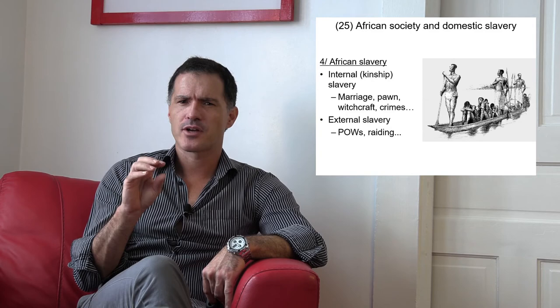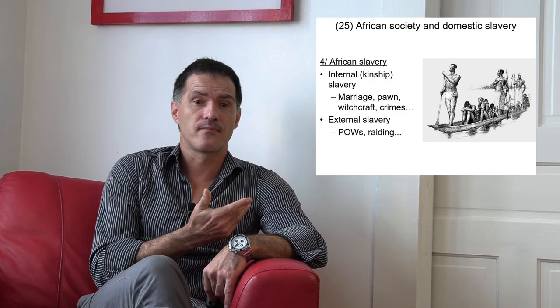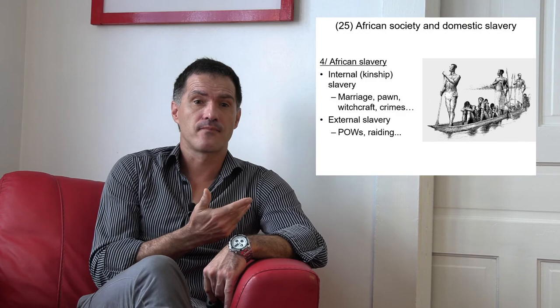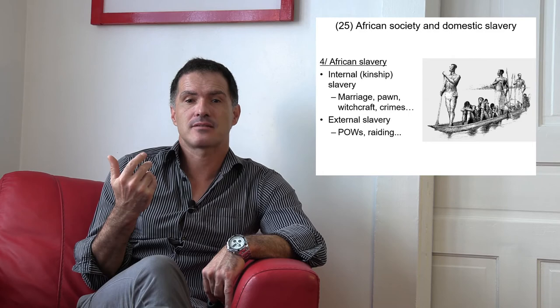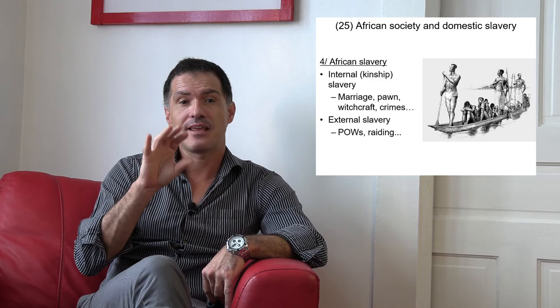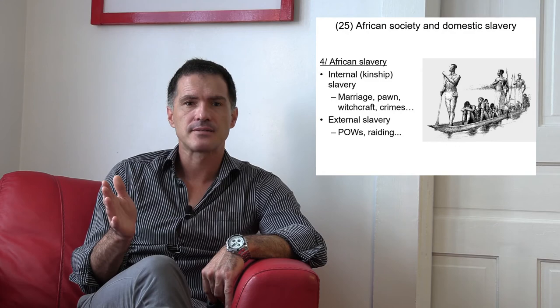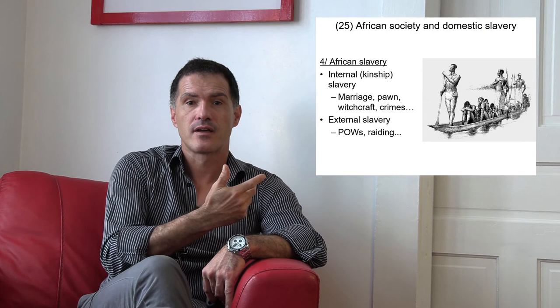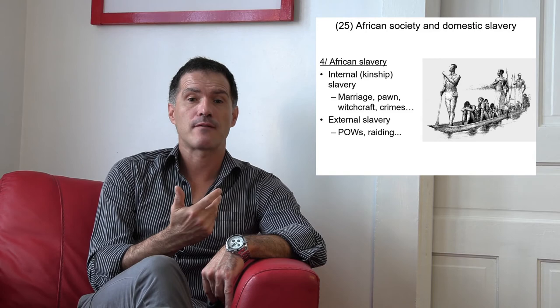Back to Africa and whether the term 'slave' can be applied to various social institutions there. Because the continent later became so involved in the Atlantic slave trade, the question of slavery within Africa has become highly political. Some white supremacists have argued that the Atlantic slave trade wasn't particularly immoral because Africans enslaved each other anyway. On the other side, some people have refused to accept that any kind of slavery existed within Africa ever, for fear that this would diminish the inhumanity of the Atlantic slave trade. As historians, we're supposed to look only at the facts: the vast majority of historians today agree that domestic slavery did exist within Africa before European slave traders showed up. There were African slave owners complicit in the slave trade, and other Africans who were victimized by it.